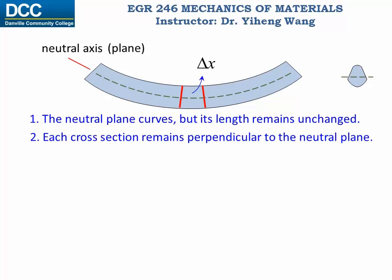And lastly, we assume that the shape and size of the cross-section remains unchanged as well. It might help you to understand if you imagine the beam as an accordion.